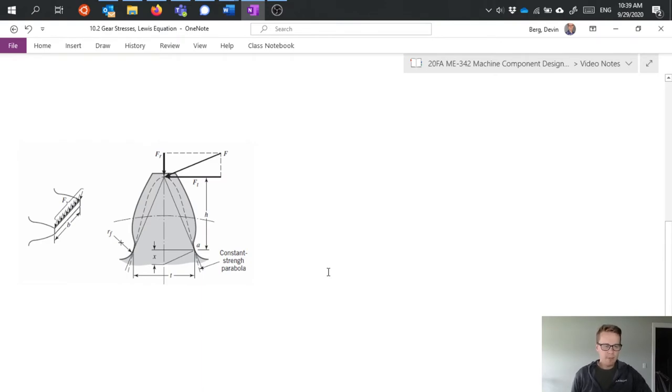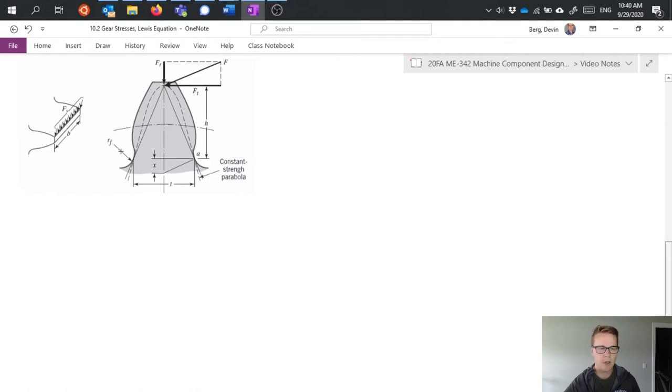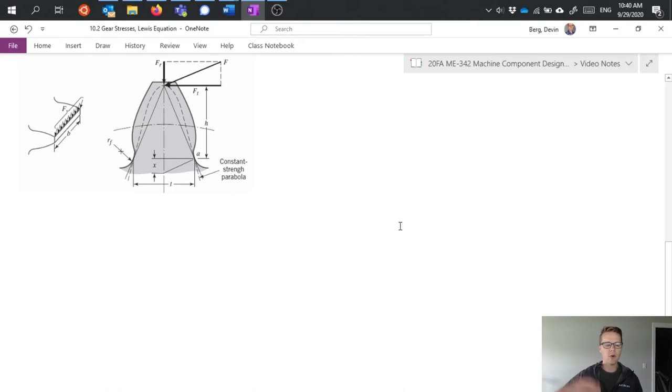A basic setup for this: the Lewis equation makes use of a geometry assumption which is that you have a parabola that you can inscribe within this gear tooth. We call it the constant strength parabola, which basically means the stress would be uniform throughout the entirety of that parabola. So as the stress increases as you move closer to the base, the parabola gets wider and therefore increases its strength. Primarily with this we're worrying about bending stress.